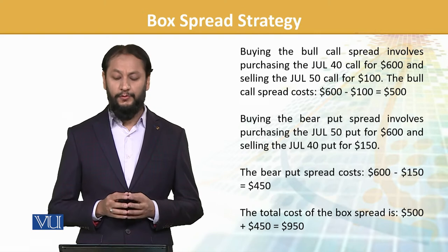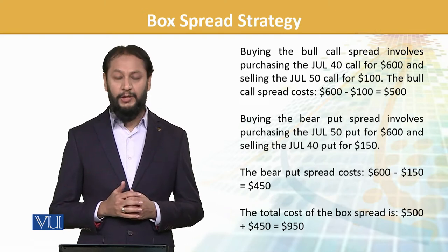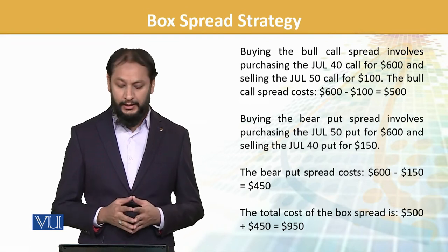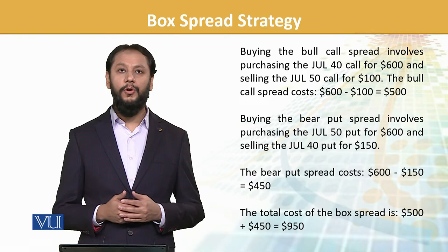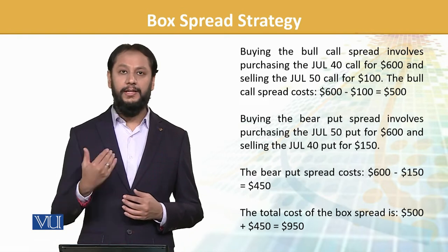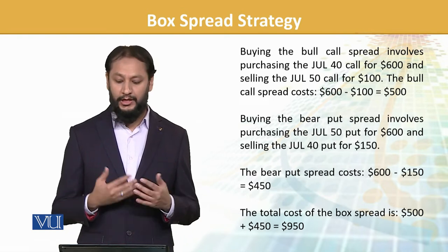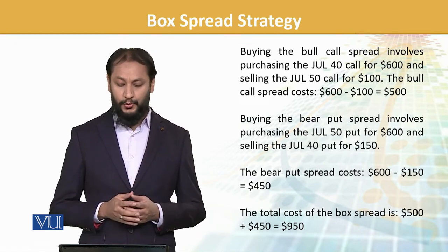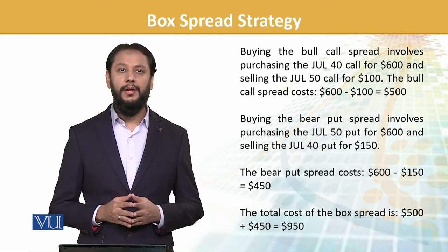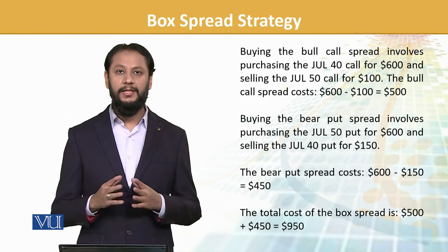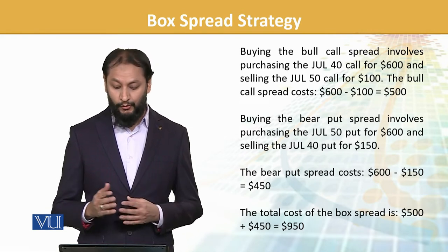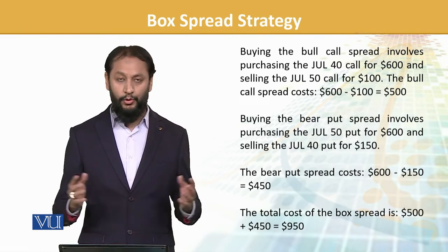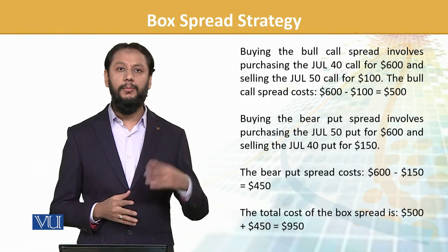Buying a bull call spread: हम 40 वाली call खरीदेंगे जो $6 की है — that's $600 outflow — and sell the 50 call to receive $100, so net outflow is $500. For the bear put spread: buy the 50 put at $6 ($600 outflow) and sell the 40 put to receive $150, so that gives us a $450 outflow for the bear put.